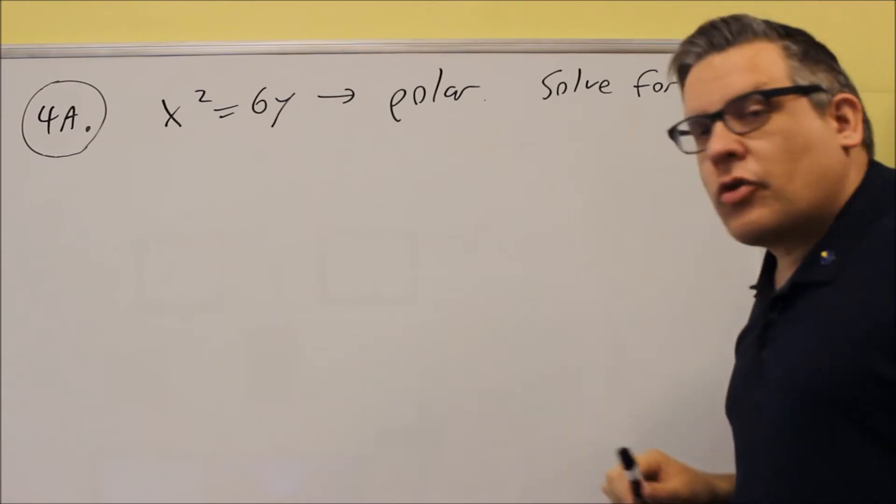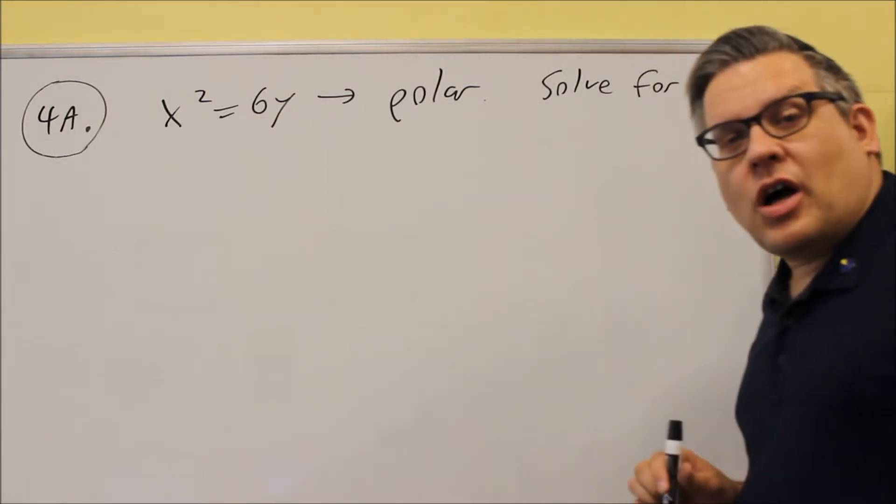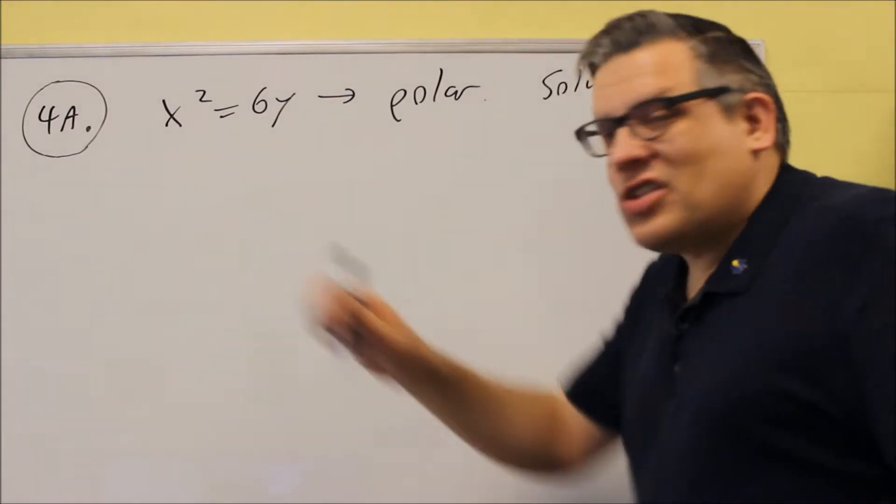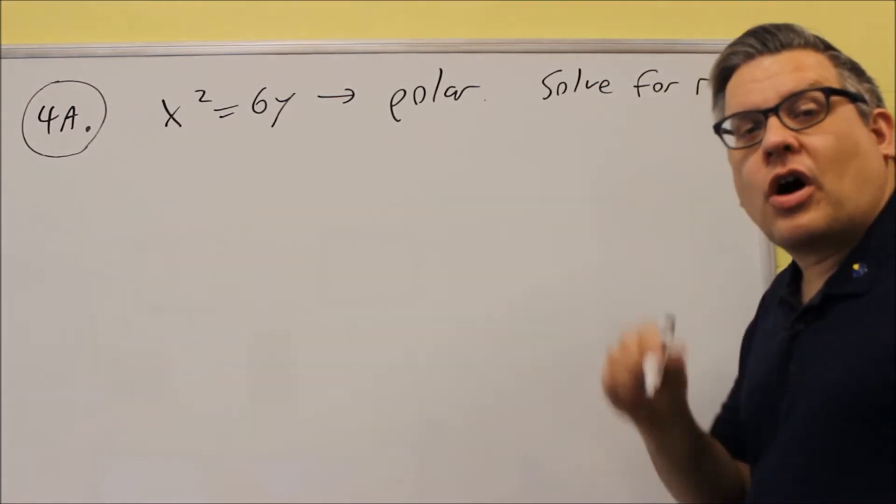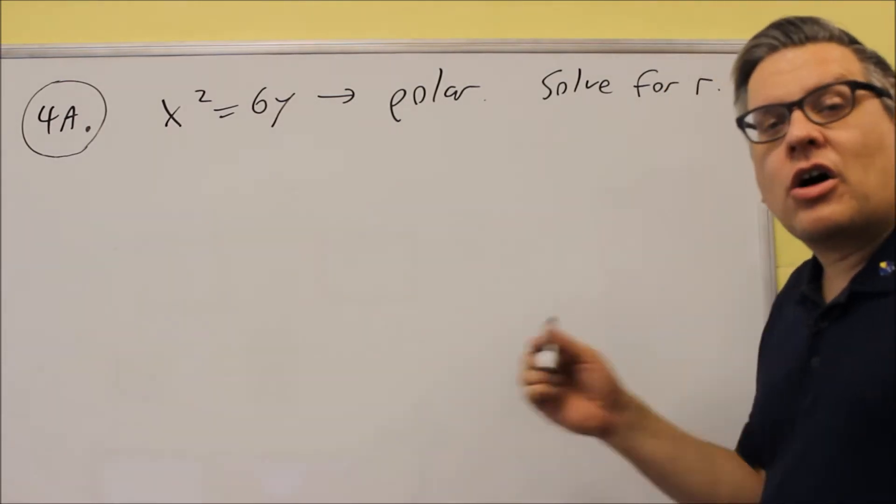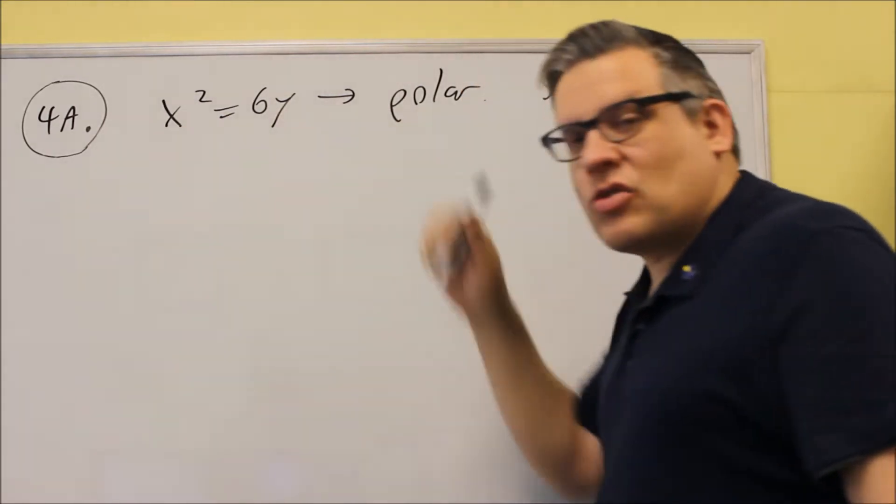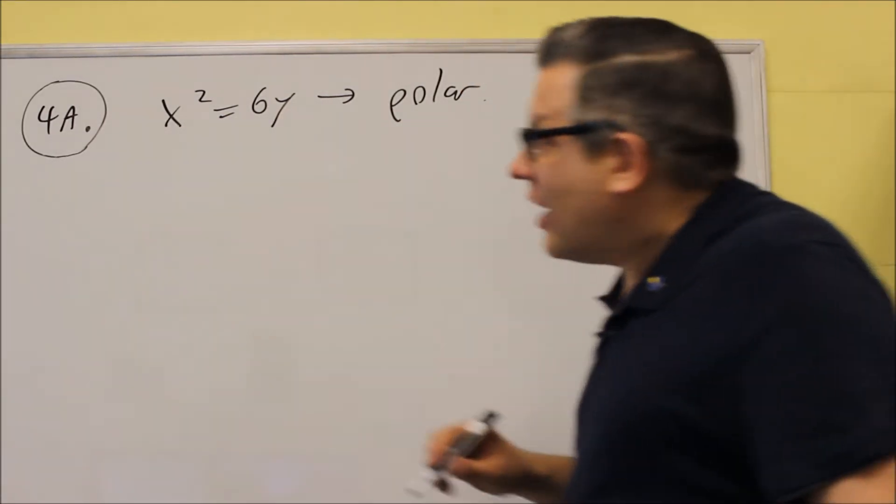So we want to convert this over into polar. Now again, you're using the same conversion formulas we've talked about before. Anytime you see an X, you want to replace it with R cosine theta. The Y gets replaced with R sine theta, so that's going to be our first step here. We want to get rid of the X's and Y's and have R's and thetas instead.